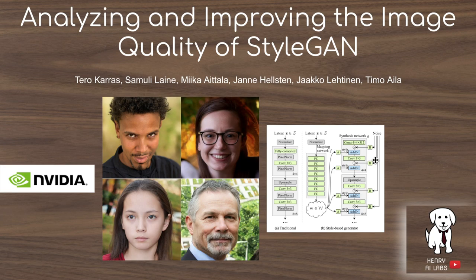StyleGAN version 2 is going to restructure the use of adaptive instance normalization and get away from progressive growing, to get rid of the artifacts introduced in StyleGAN version 1, like these water droplet effects and fixed positions of eyes and noses when generating these images. The authors are also going to introduce a perceptual path length normalization term in the loss function to improve on their already impressive latent space interpolation ability.